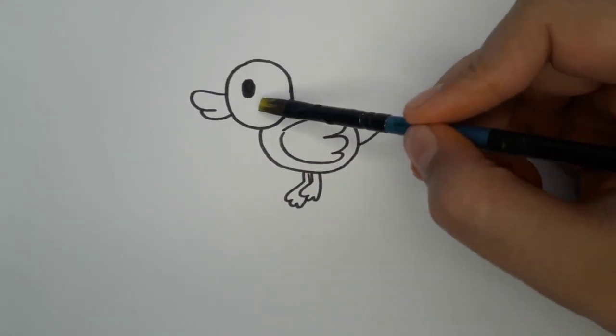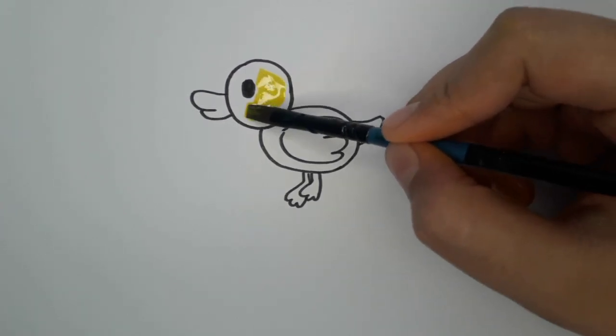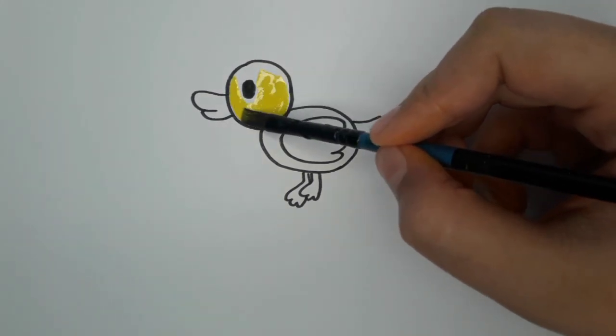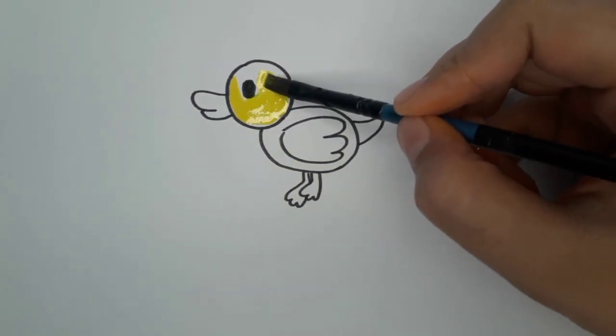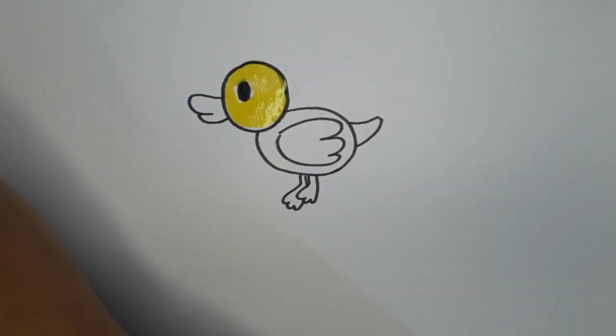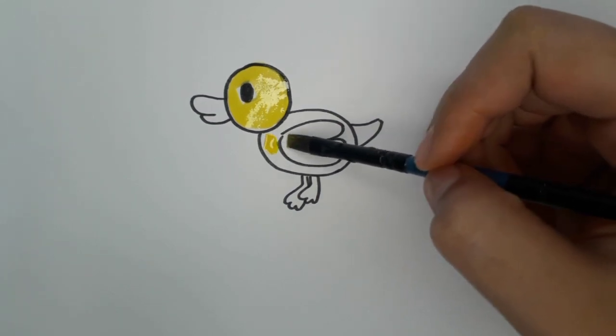Step 3, color explosion. Ready for the grand finale? Unleash your inner color magician. Grab your markers and let your duckling swim into a vibrant world. Go sunny yellow for the body, bright orange for the beak, and add any splashy colors you love for the feathers.